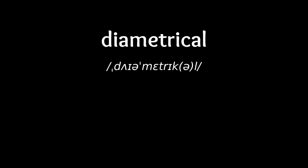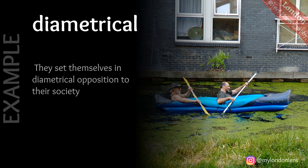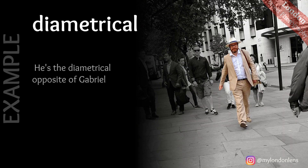Diametrical — of opposites, complete. Let's try it in a sentence: They set themselves in diametrical opposition to their society. Another example: He's the diametrical opposite of Gabriel.